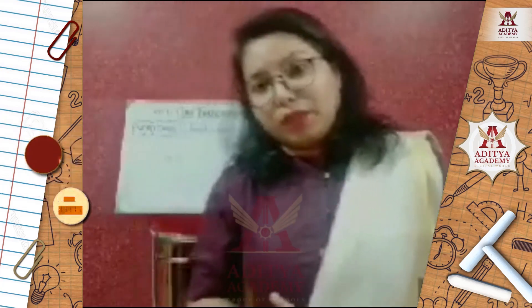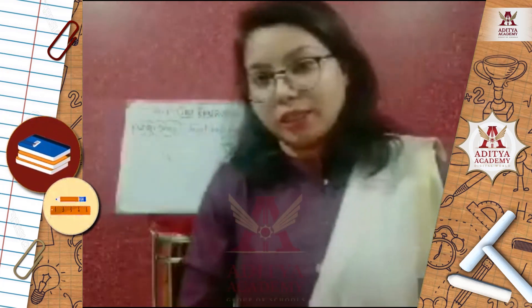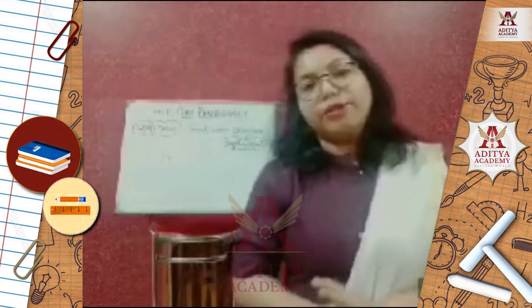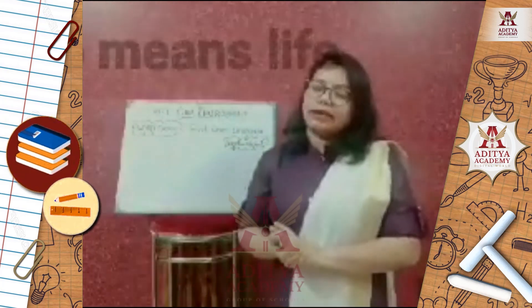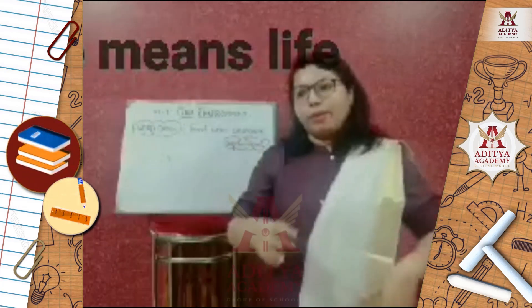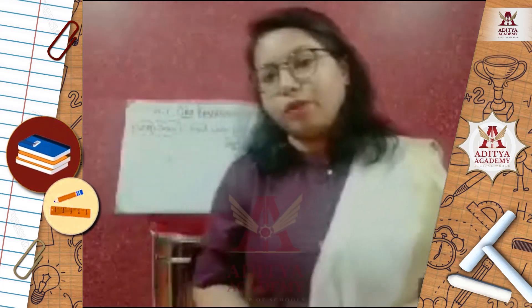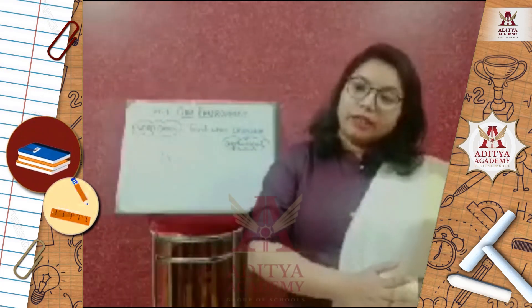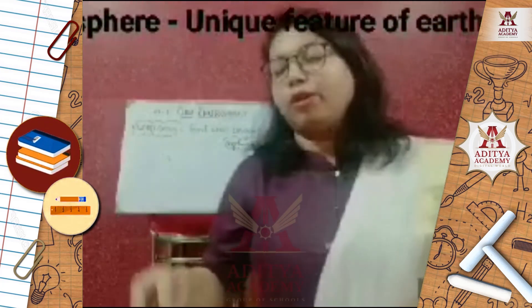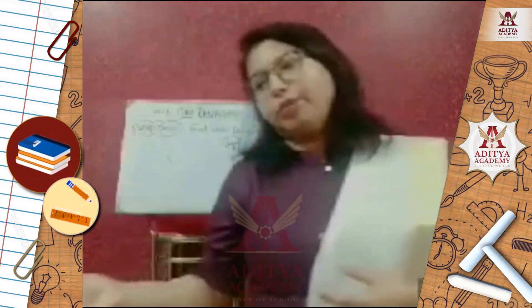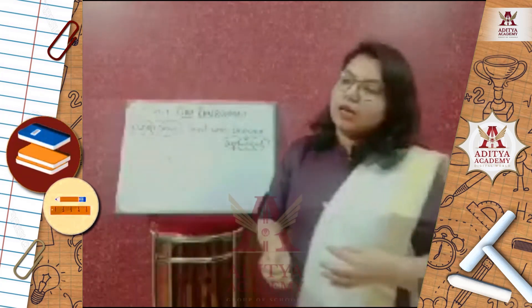The biosphere is a narrow zone where land, air, and water meet and interact with each other. Simplifying this, the biosphere is a layer where all living organisms live. The word 'bio' means life and 'sphere' means layer, so the layer where living organisms sustain is known as the biosphere. It is the life-supporting layer and a unique feature of our planet Earth. The biosphere is only present on Earth and not on any other planet, making Earth a unique planet in the solar system.